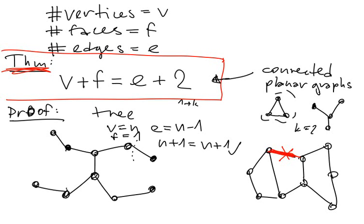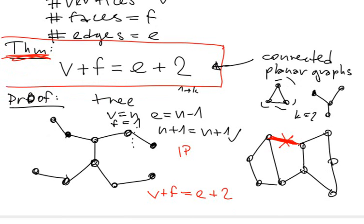We make the graph smaller. And this is the thing how induction works. We make our graph smaller. Now, we use induction hypothesis that v plus f equals e plus 2. Like this. And now we return the edge back. For this guy here, it holds. So we take the edge back.